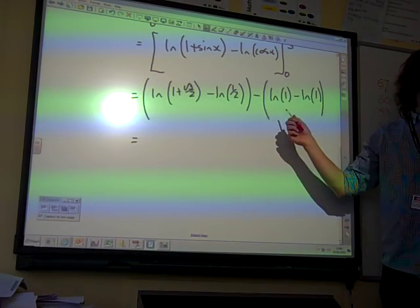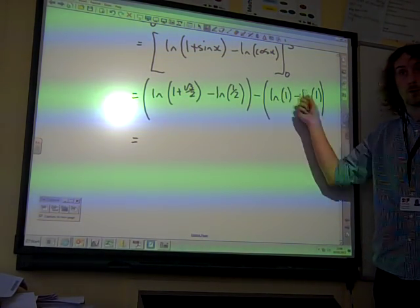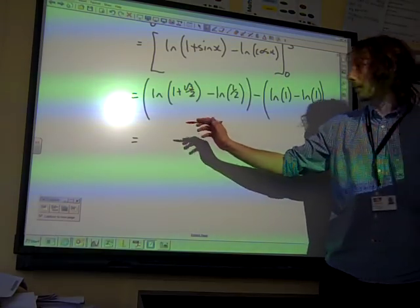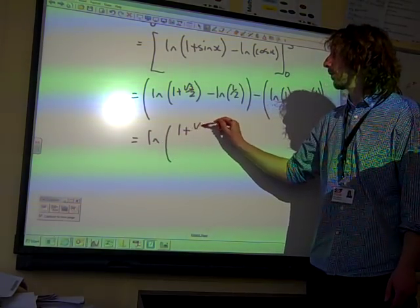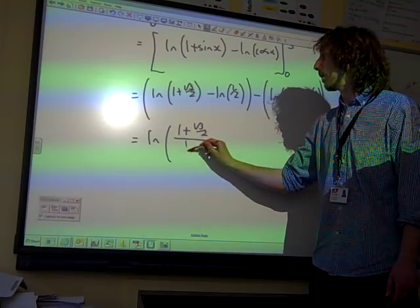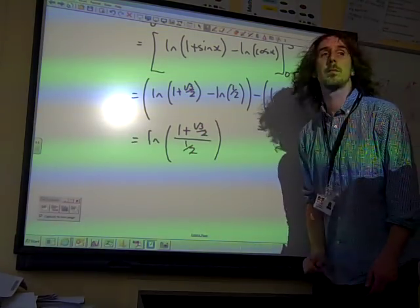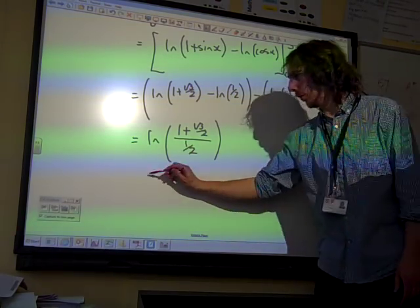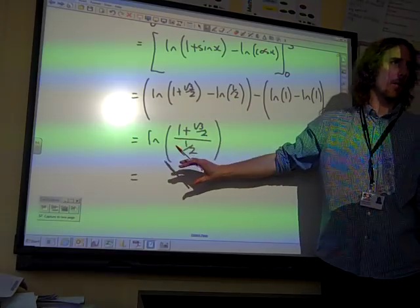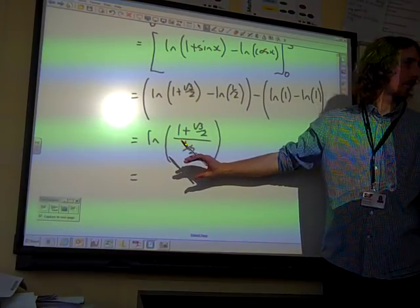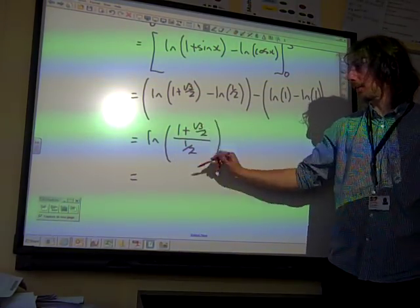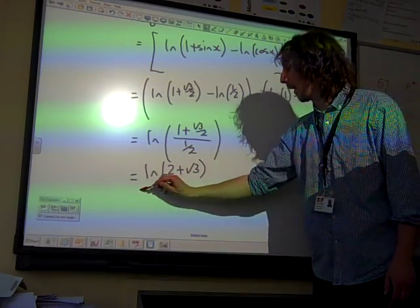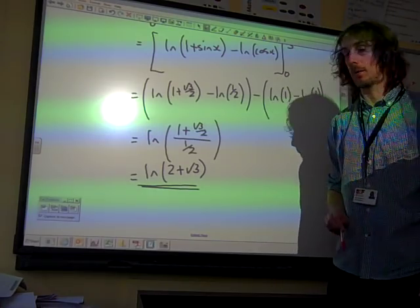And so we've ended up with, well, this is all 0. The natural log of 1 is 0 anyway. We've also subtracted it. So we've just got this bit here. We use our logarithms rules to say that that is 1 plus root 3 over 2 over half. That's not particularly nice how we've written it there. But what we could do is if we're dividing by half, that's the same as multiplying by its reciprocal. So that's multiplying that top line by 2. Natural log of 2 plus root 3. And there is the answer that we were looking for.